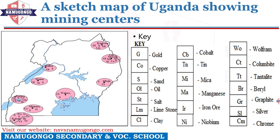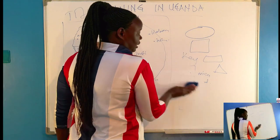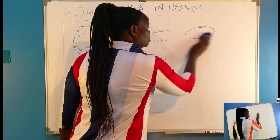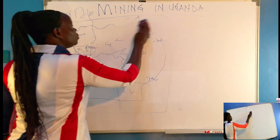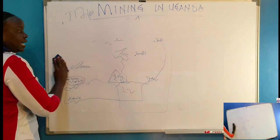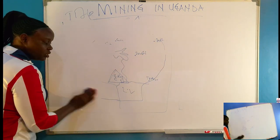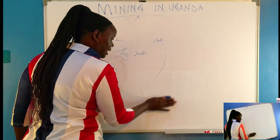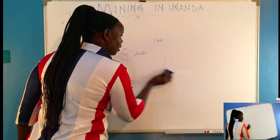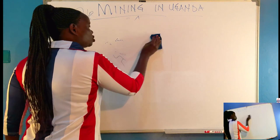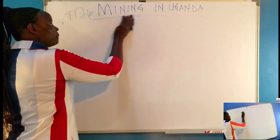This is how we introduce questions in paper 3. We are going to look at a sample question and see how that question can be attacked. How can we attack a question about mining?